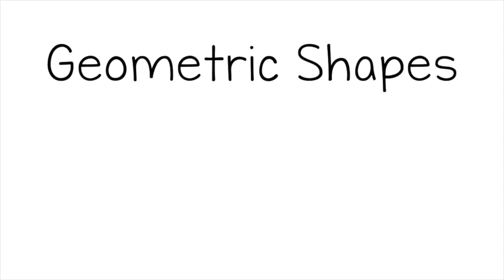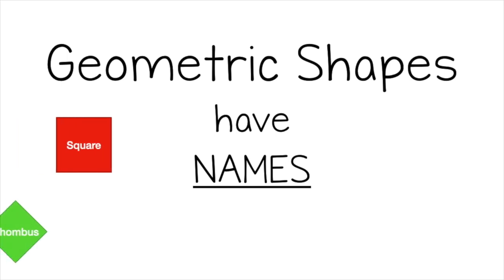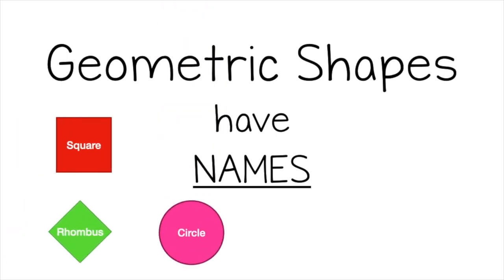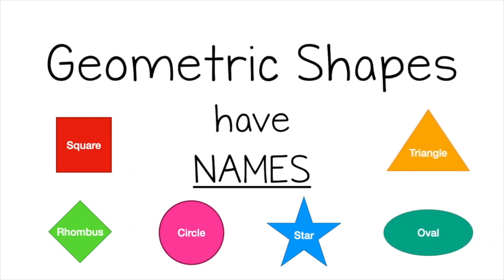The first group you might have heard about in math. These are geometric shapes, and geometric shapes have names. Some examples of geometric shapes are square, rhombus, circle, star, oval, and triangle.